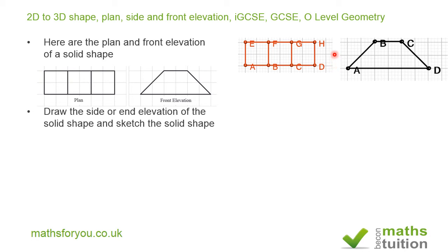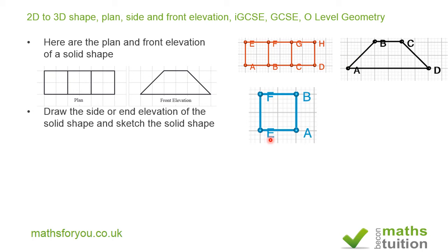What we're looking for is the side elevation or end elevation. We're looking directly at this surface here — not that way, but this way. So the width of what we see would be the same as BF, and the height of what we see is the same as BA. This is what we have for our side or end elevation.